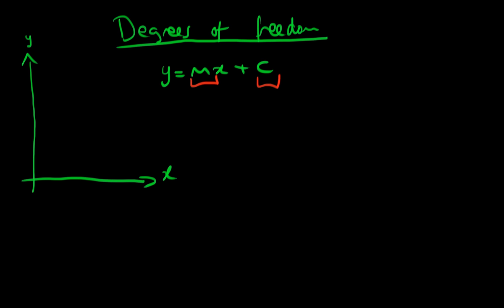So if I'm free to vary both m and c, then I can draw infinitely many curves which intersect the y-axis wherever and also have whatever gradients I want. They can be sloping upwards, they can be sloping downwards, they can be flat. I can draw infinitely many curves that way.